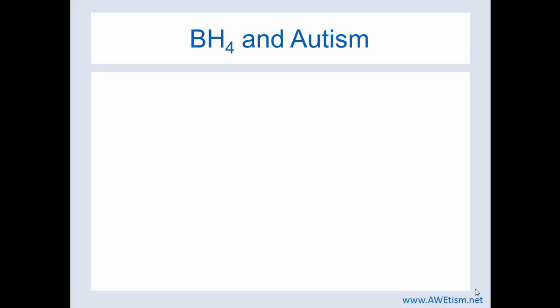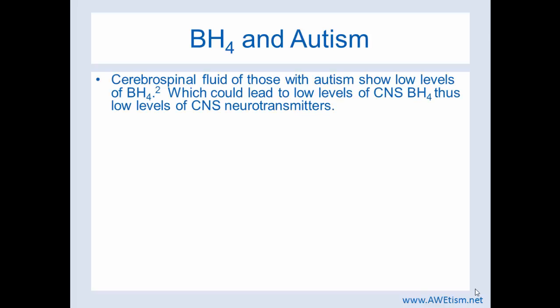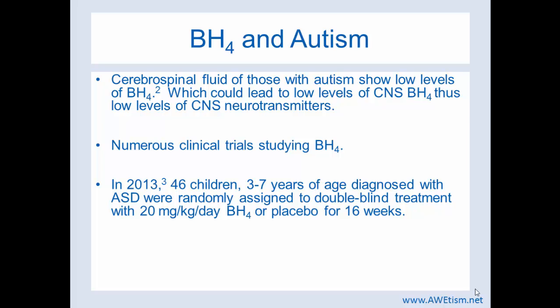BH4 and autism — that's what we're all here for. Cerebral spinal fluid of those with autism has shown low levels of BH4. What that really means is, in the spinal fluid you have low levels of BH4 that can translate to central nervous system low levels of BH4, which then impacts directly the central nervous system neurotransmitters. There have been numerous clinical trials studying BH4, both double-blind placebo-controlled crossover trials — which are like the holy grail — all the way down to open-label trials. I was actually quite shocked to learn how many clinical trials have been done studying BH4 in autism. So I just pulled out one to discuss the results on.